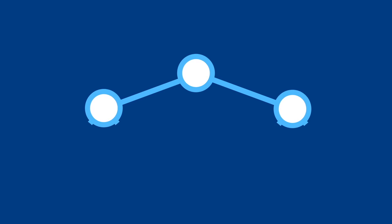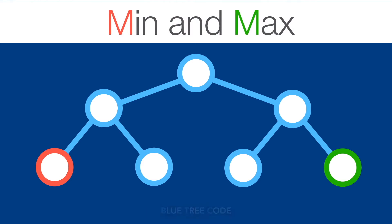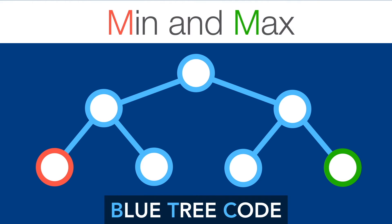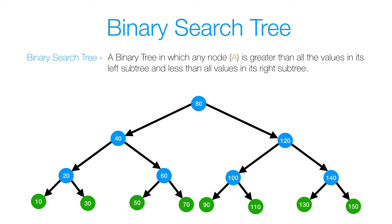Hello everyone, today we're going to recursively find the minimum and maximum values in a binary search tree. So let's get started. A binary search tree is a binary tree in which every node is greater than all the values in its left subtree and less than all values in its right subtree.